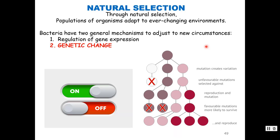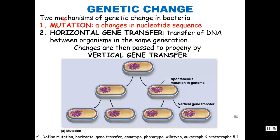Hello and welcome back to part three of microbial genetics. In this lecture we're going to learn all about genetic change. There are two mechanisms of genetic change in bacteria. A mutation is a change in the nucleotide sequence of DNA — if you change the recipe, you get a different product, so it makes a different protein. Mutation can occur spontaneously or naturally, or it can be caused by a mutagen. An example: ultraviolet light will cause changes in DNA.